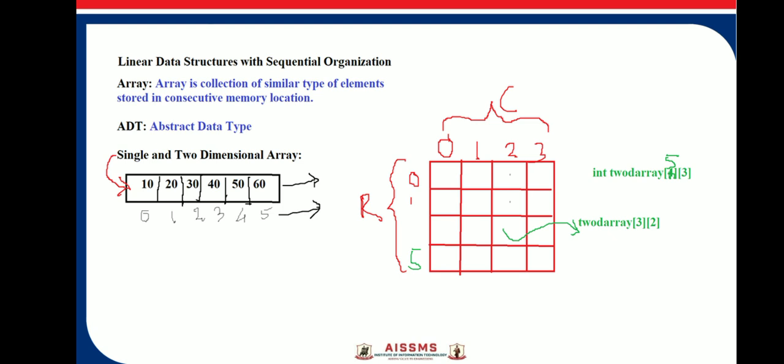We will now consider single-dimensional and two-dimensional arrays. A one-dimensional array consists of only one row and a number of columns.